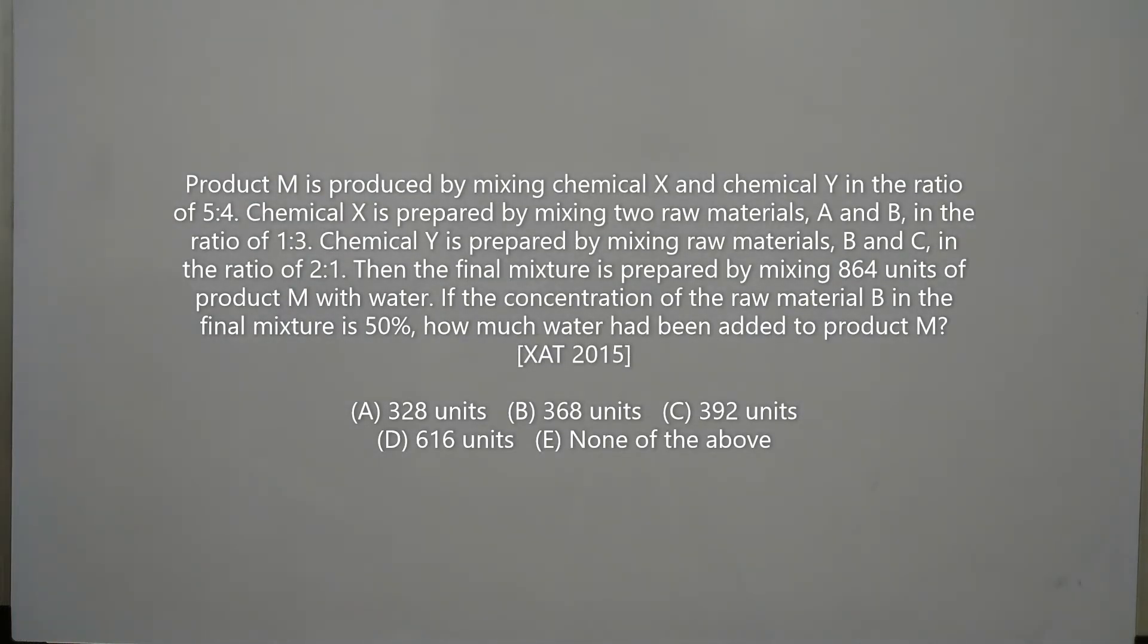Product M is produced by mixing chemical X and chemical Y in the ratio of 5 to 4. Chemical X is prepared by mixing two raw materials A and B in the ratio of 1 to 3, and chemical Y is prepared by mixing raw materials B and C in the ratio of 2 to 1.